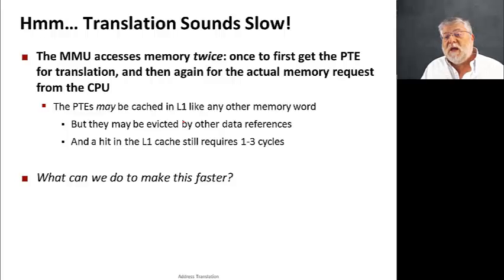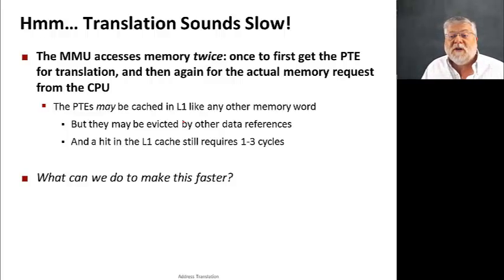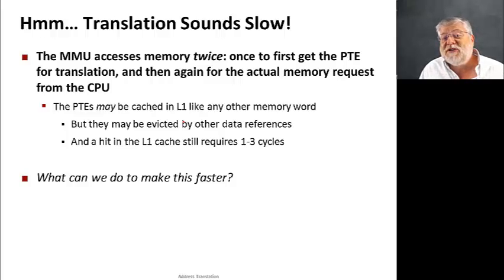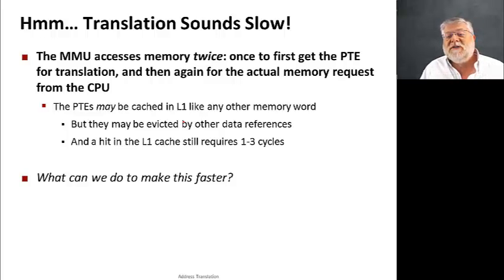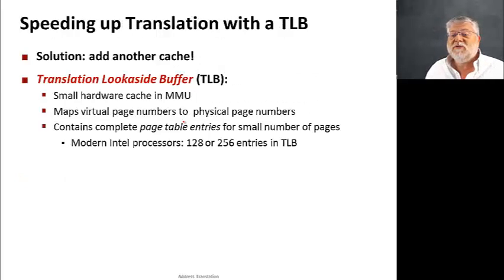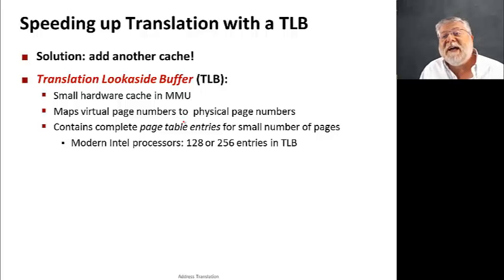The MMU accesses memory twice: once to get the PTE for translation and once for the actual memory request. Since page table entries are in memory, they can be cached like any other memory word, but might get evicted by other data references. Since we're doing this for every memory address, this starts to potentially add up. To make this process go faster, we're going to create another construct called a translation look-aside buffer, or TLB.